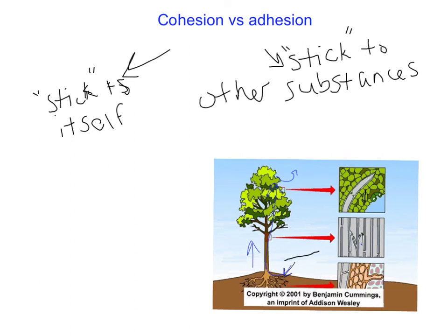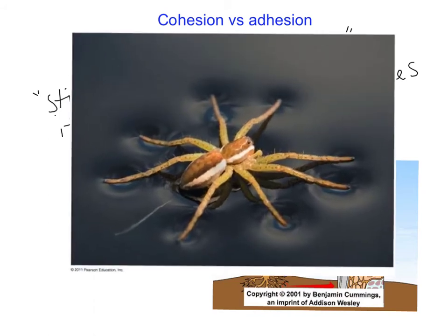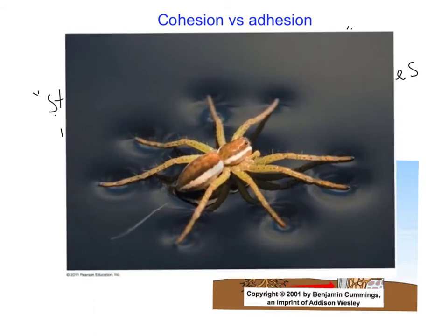Another example of cohesion and adhesion at work is surface tension. When you fill a glass slightly more than it can hold, you get that bubble along the top. Or as you can see with a spider walking on water — you can see it's slightly caving around its feet, but it's not breaking the hydrogen bonds that hold the water together. There's enough dispersion of forces that the spider stays on top.